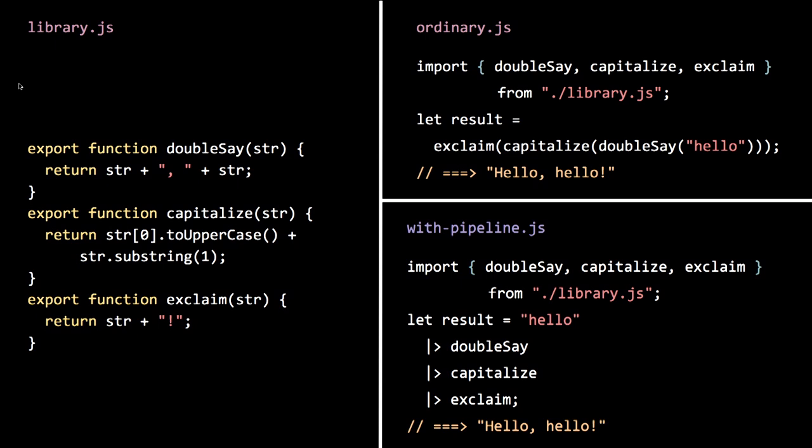Without the pipeline operator, a lot of people want to use method calls for each step, but that doesn't compose well at all. By using functions, they can just be exported from modules.